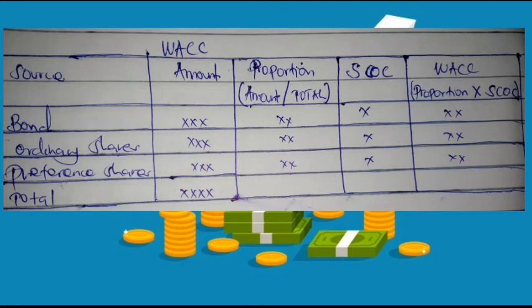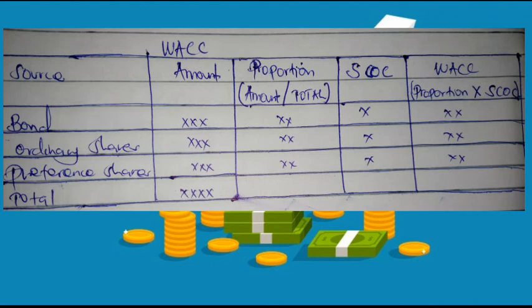After calculating the specific cost of capital, the next step is to calculate the overall cost of capital. We draw a table with five columns: sources of capital (bonds, ordinary shares, preference shares, reserves, and total), amount (showing the amount of each source), proportion (calculated by dividing each amount by the total), specific cost of capital, and weighted average cost of capital (WACC). The WACC is obtained by multiplying proportion by the specific cost of capital for each source.